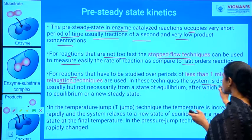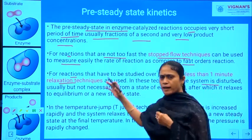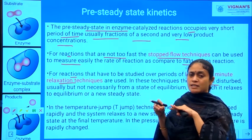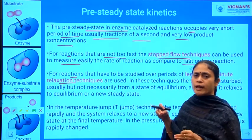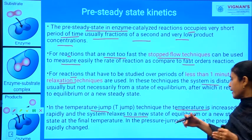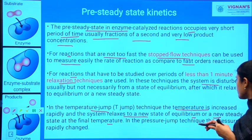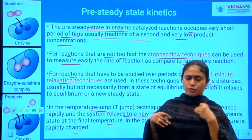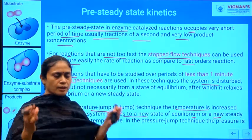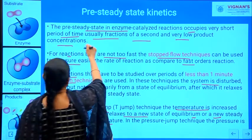In relaxation techniques, the system is disturbed. If you increase the temperature, change the pH, or stop the reaction, there is a chance of disturbance in the system. But the disturbance is not too high — it will not hamper the equilibrium of the reaction. In the temperature jump technique, the temperature increases rapidly and the system relaxes to a new state of equilibrium at the final temperature. In the pressure jump technique, the pressure is rapidly changed. In any situation, there will be some disturbance in the reaction process, but the equilibrium will not change — that particular situation is called the pre-steady state, which lasts only for fractions of seconds.